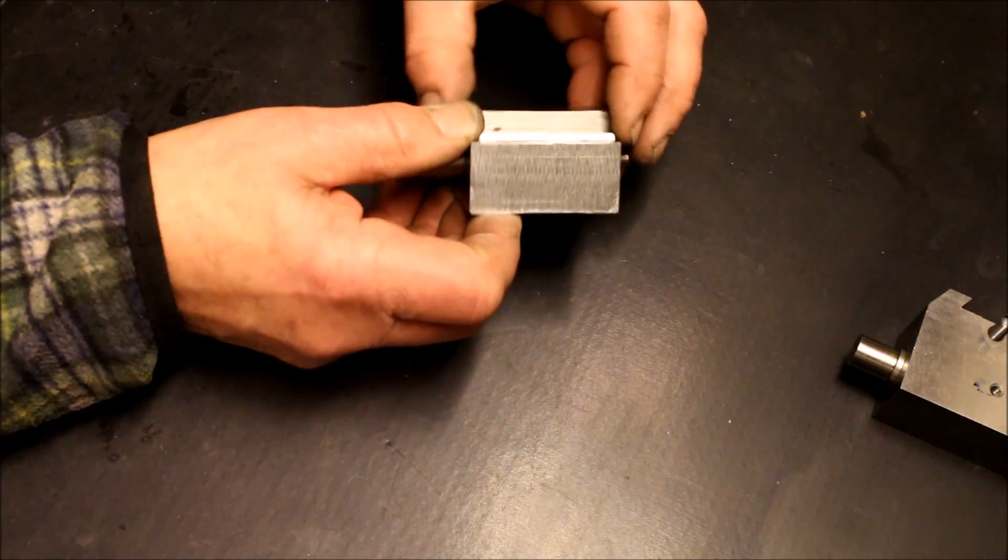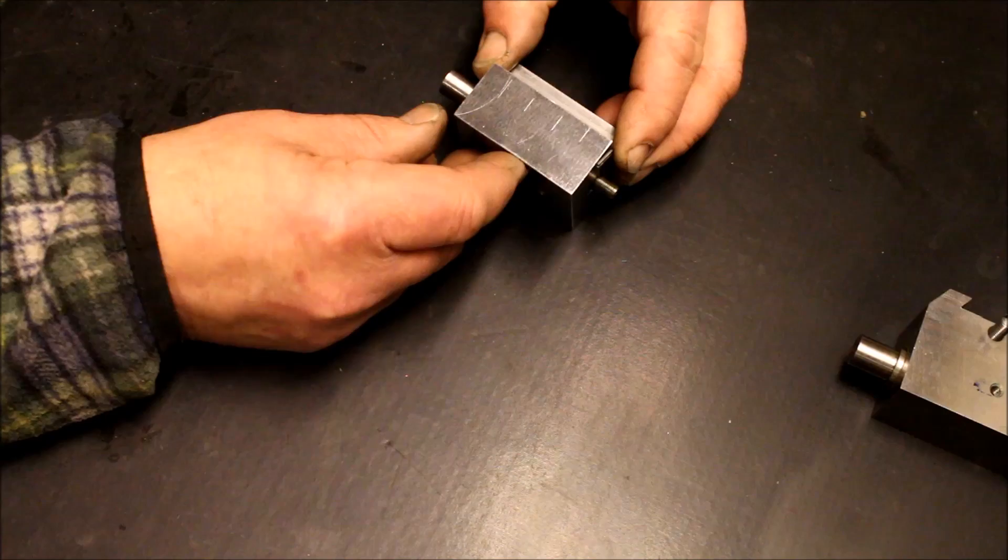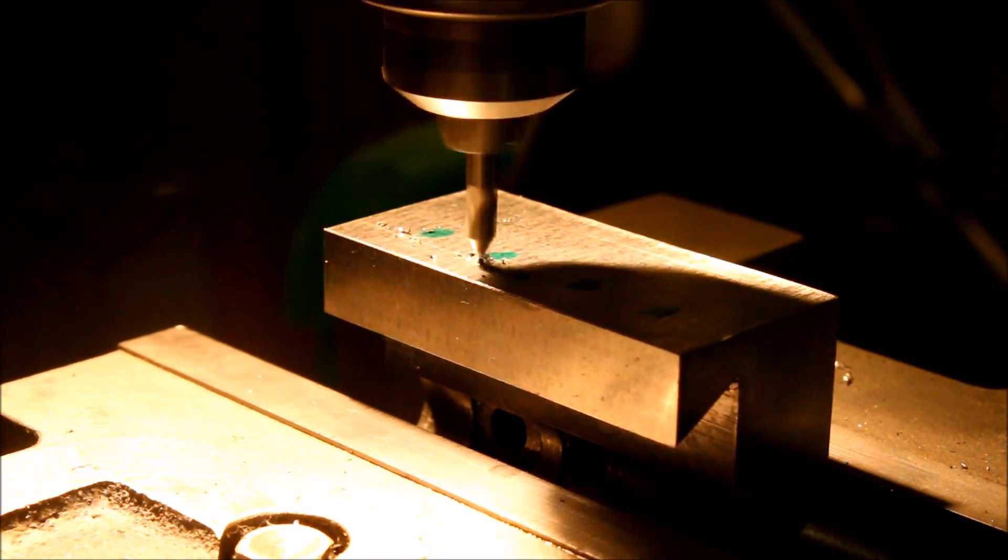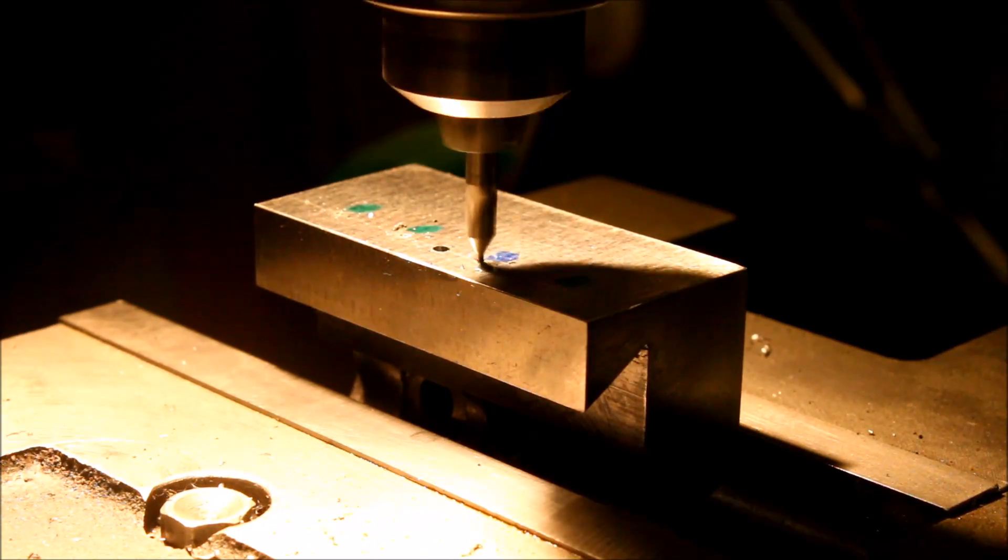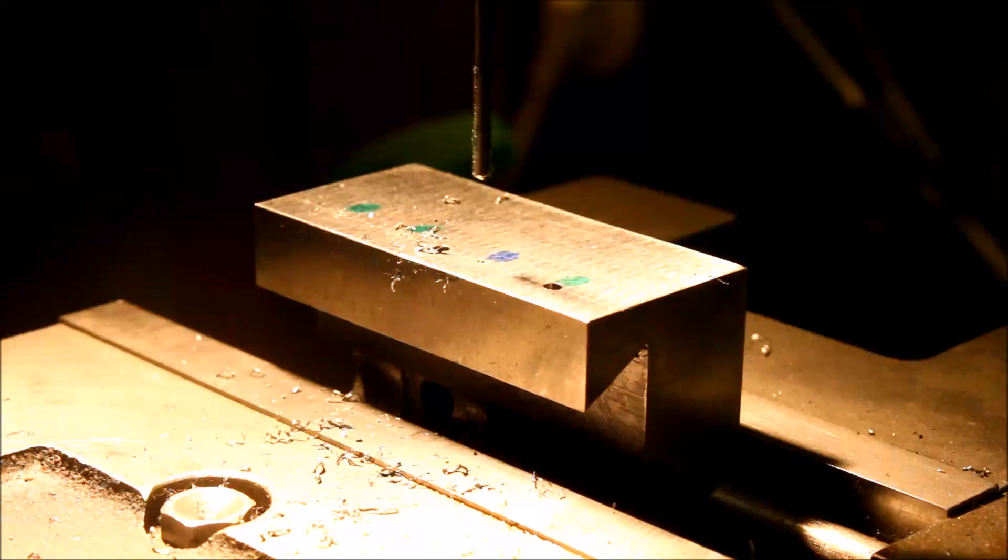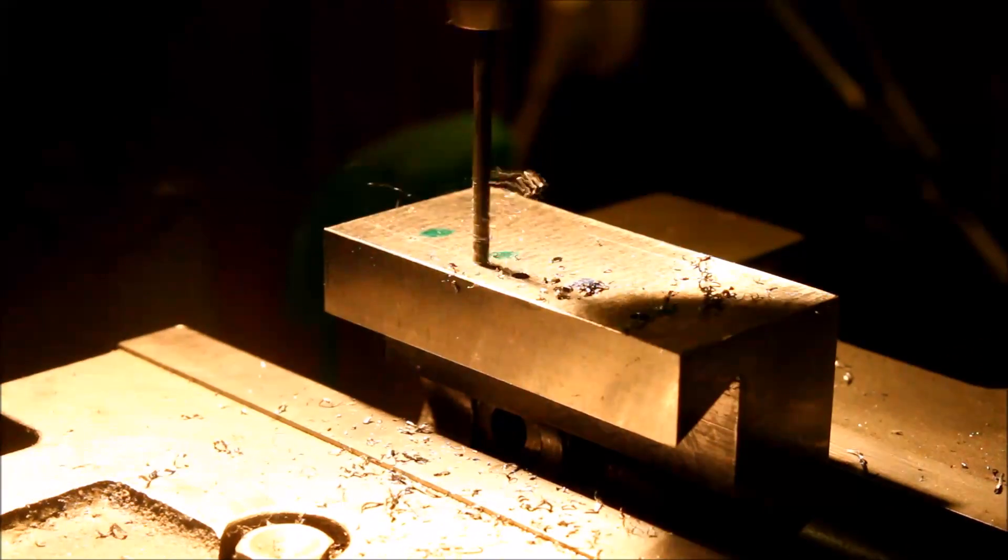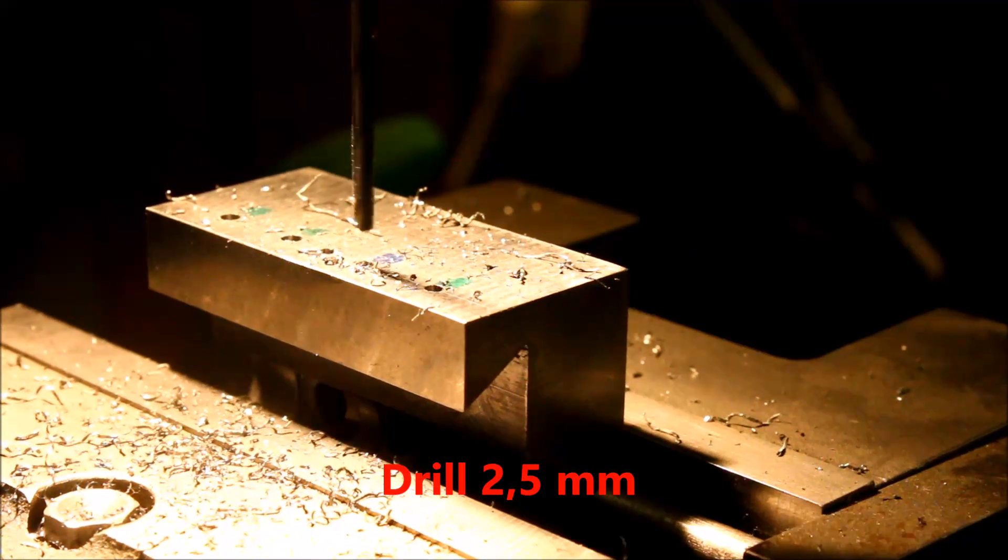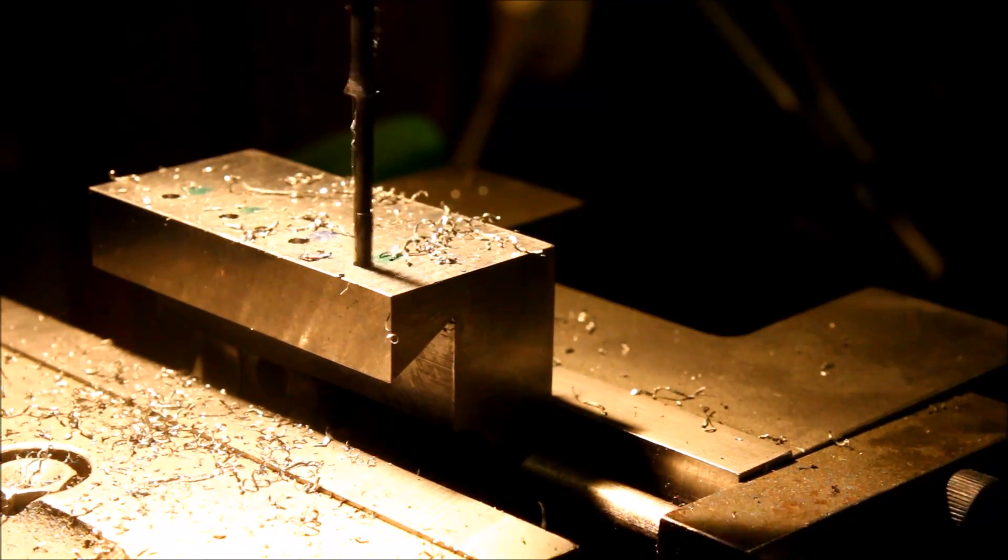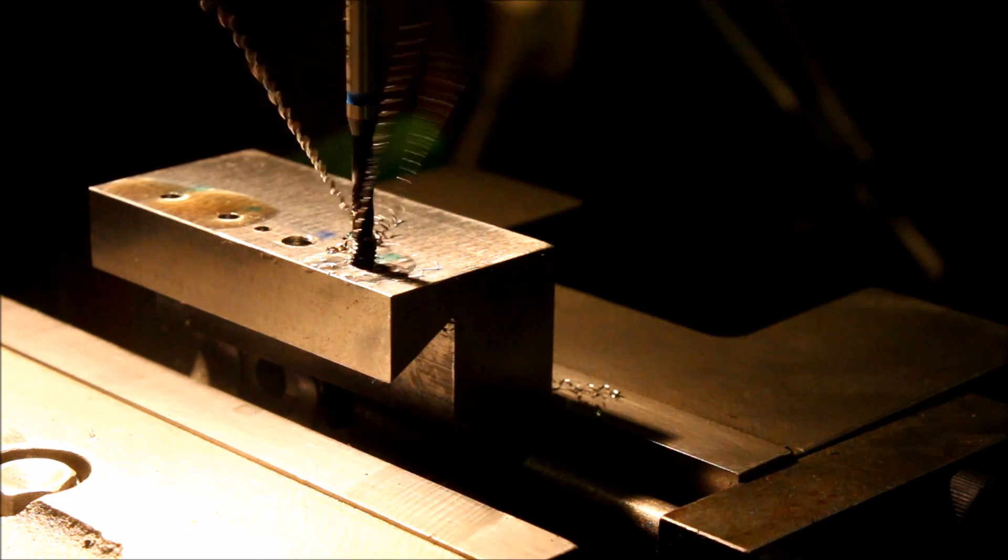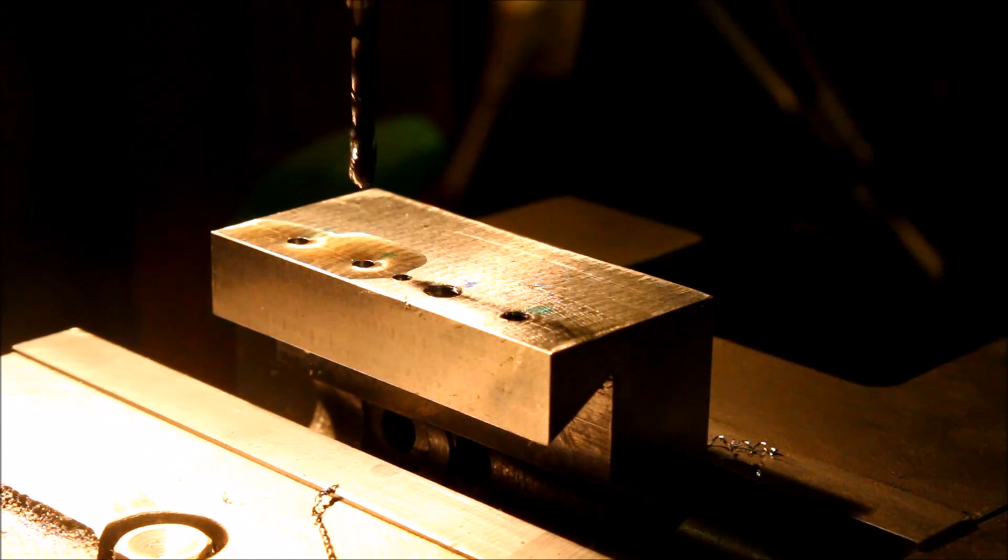So the next step is to drill a couple of holes. Five holes required in this block, one center screw to prevent the gib from moving sidewards. One for the locking screw and three for the grab screw to the gib.